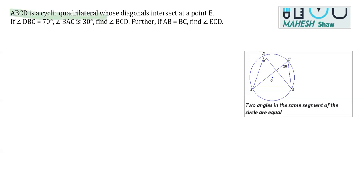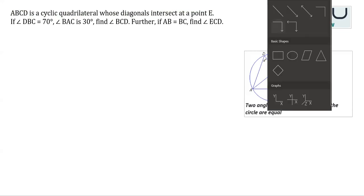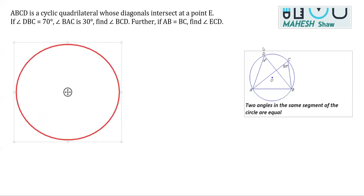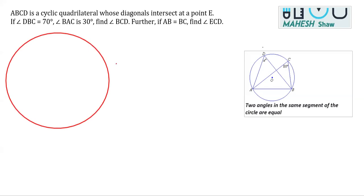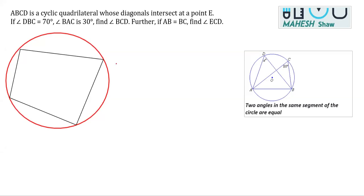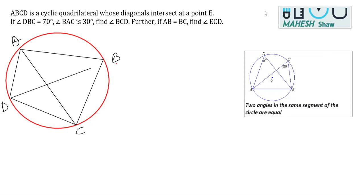The question says ABCD is a cyclic quadrilateral whose diagonals intersect at point E. To begin, I draw a circle and take any four points on it, joining them to obtain a cyclic quadrilateral — not a trapezium or parallelogram. The diagonals are AC and BD, so I join both AC and BD, and their point of intersection is marked as E.